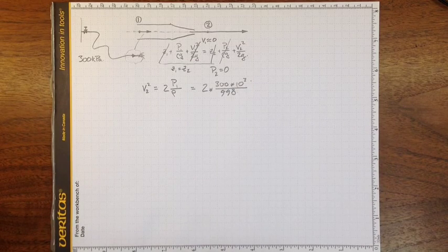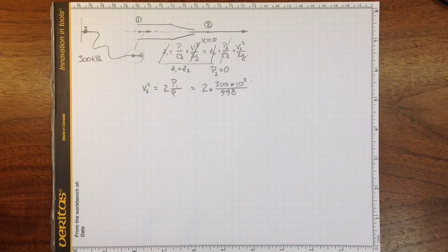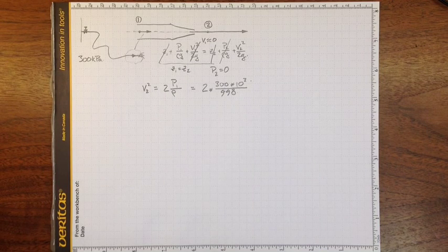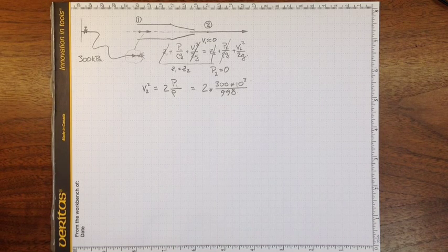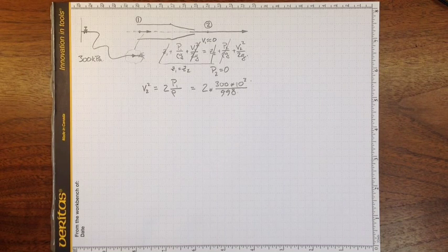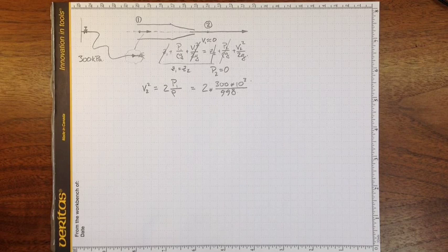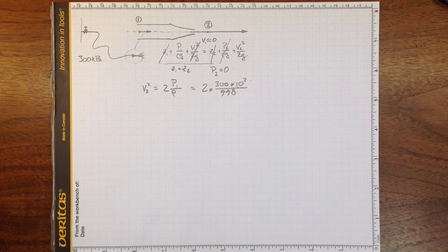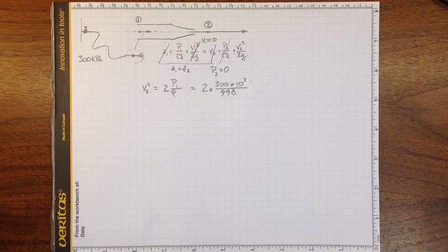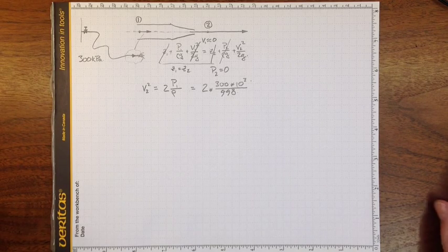Plugging in, 2 times 300 times 10 to the third, divided by 998 is 600 and a little bit. And taking the square root of that, the velocity will be 24.5 meters per second.